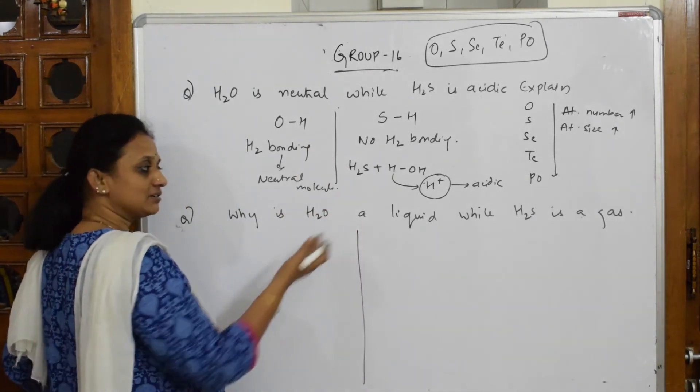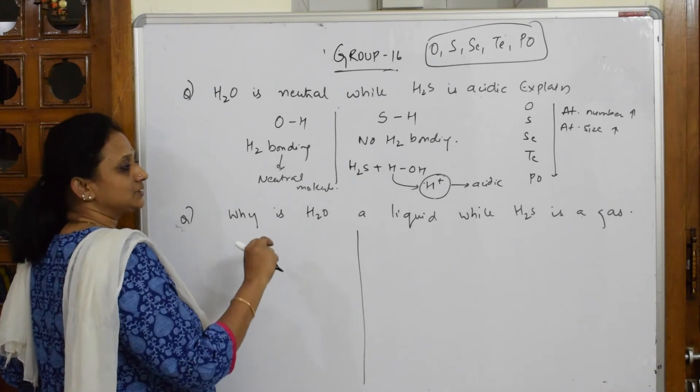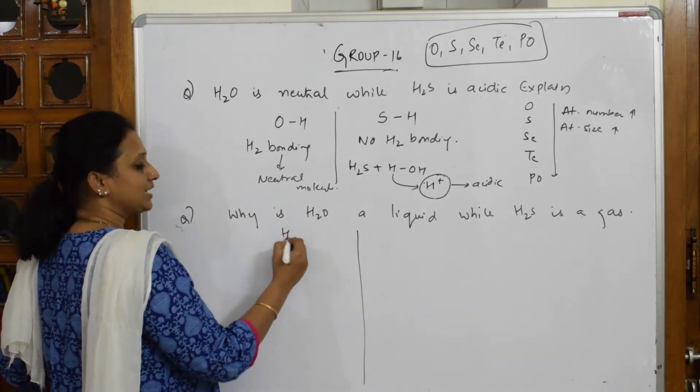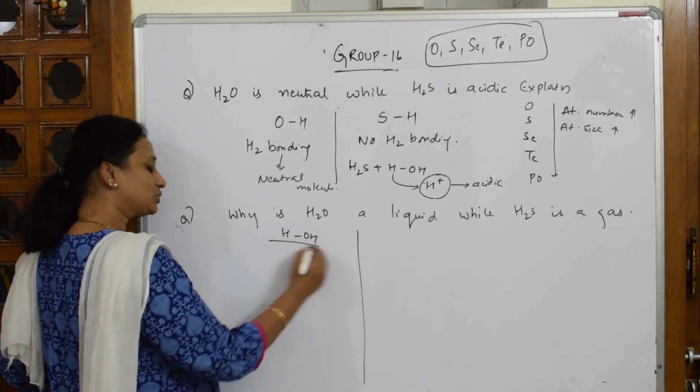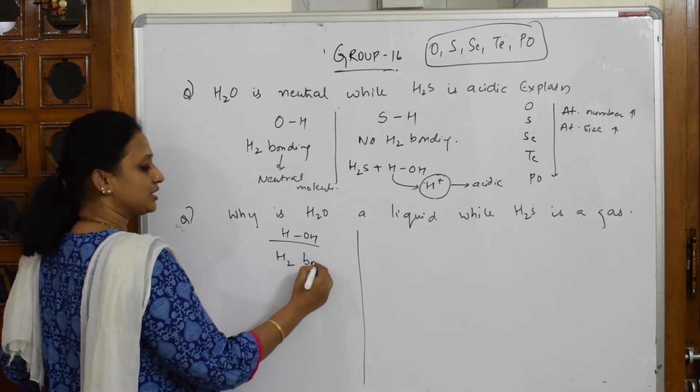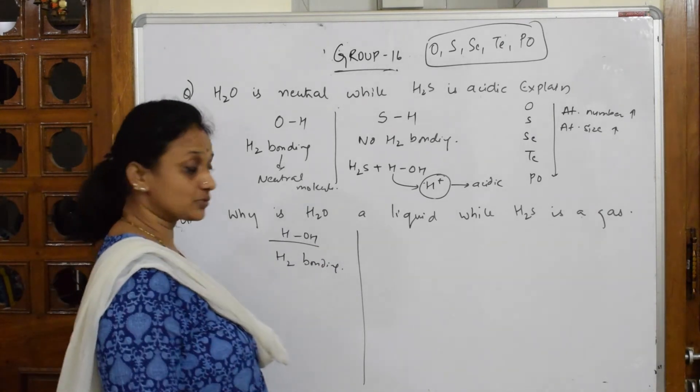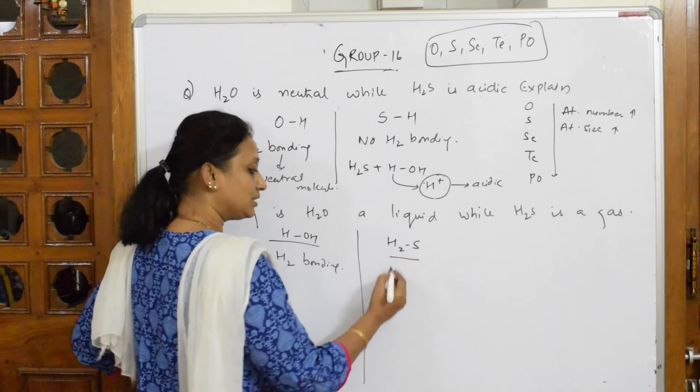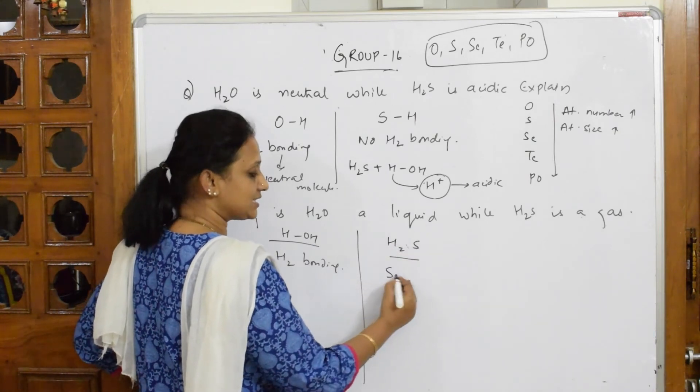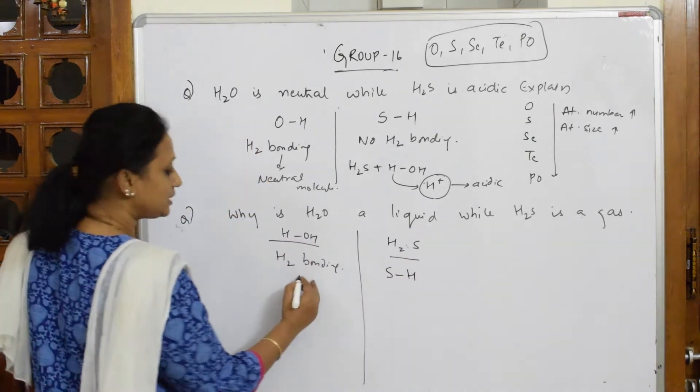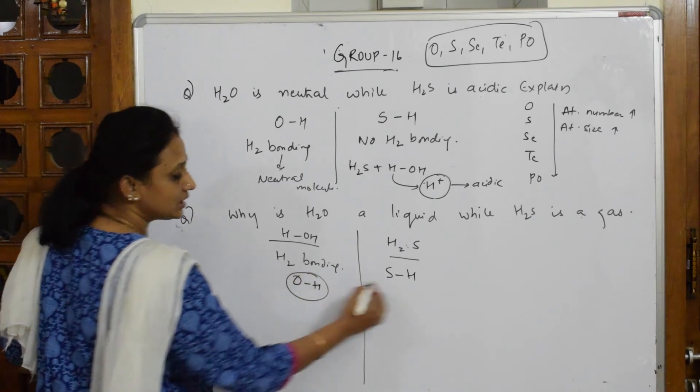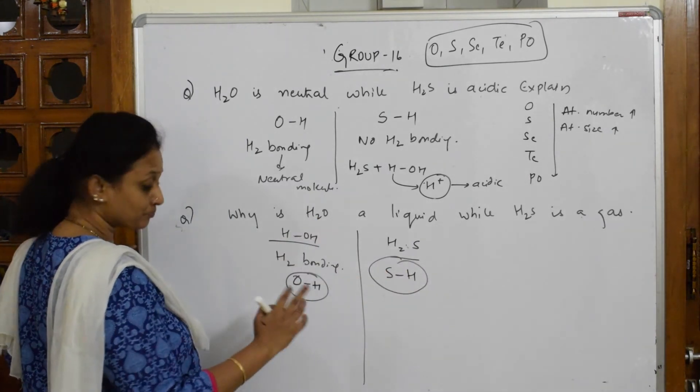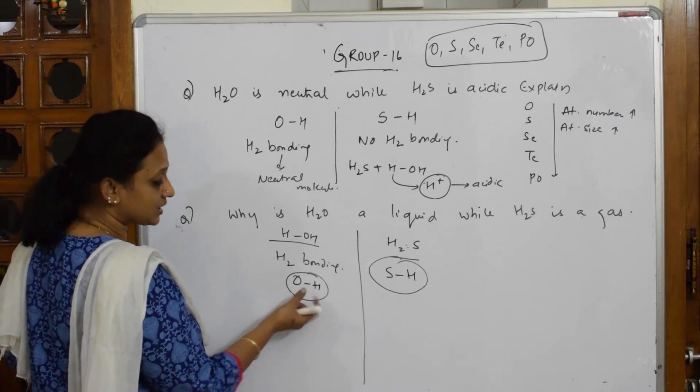So write in this term. Let us write and explain the same way here. Same concept again but here how do you write? If I have to write the same answer here also, hydrogen bonding is observed, H2O is a gas. Now you are going to write in this way. The bond between S and H and the bond between O and H, start comparing.